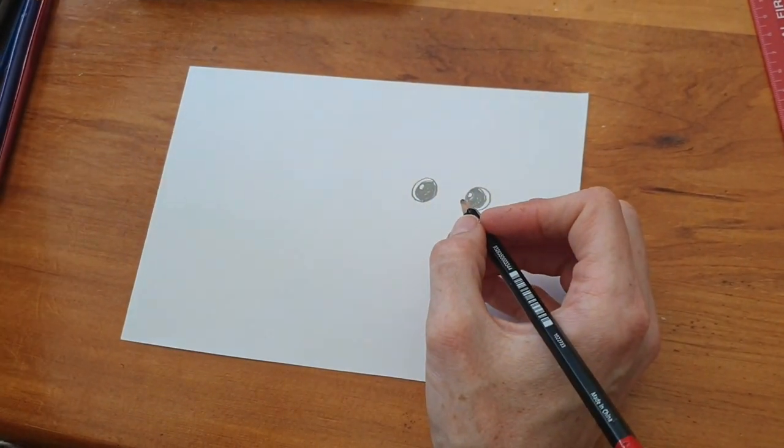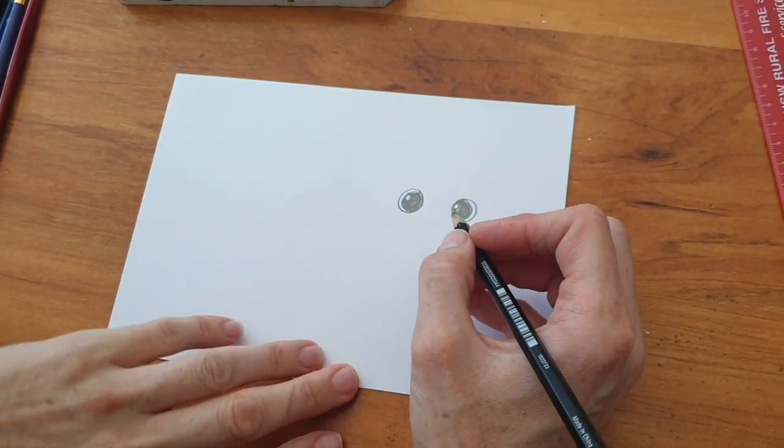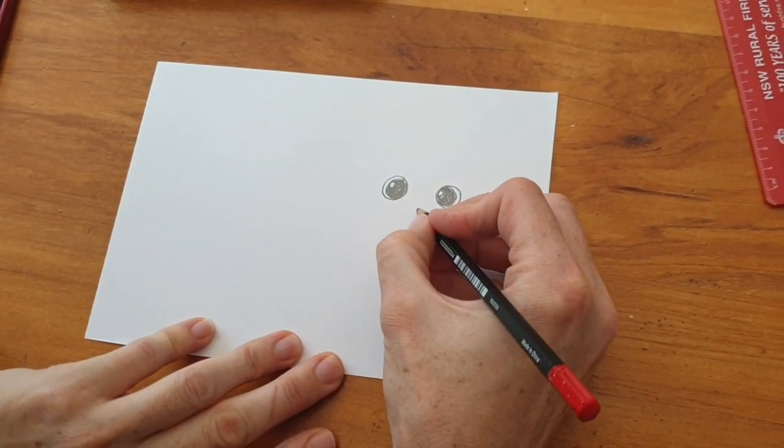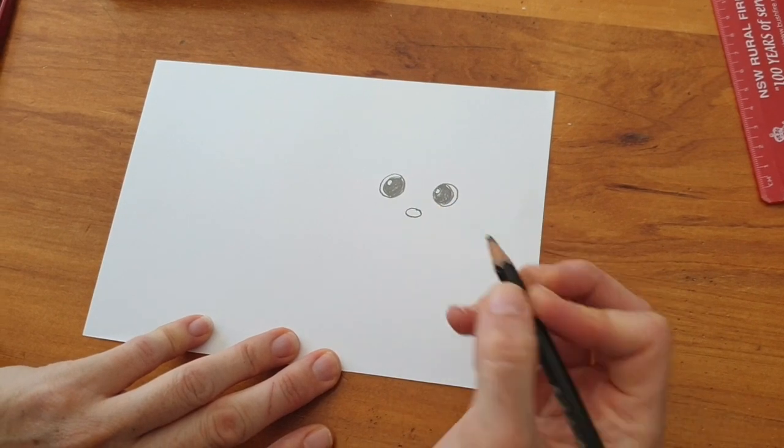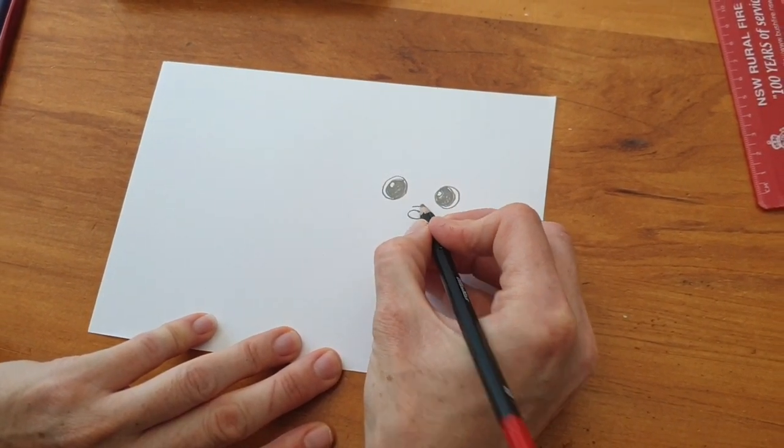So then after that you're going to do your little nose, little round nose here, and give it a bit of a snout.